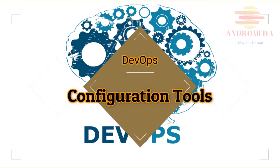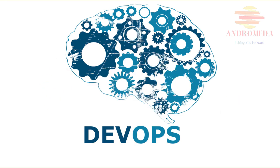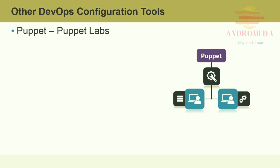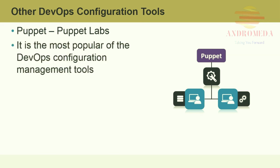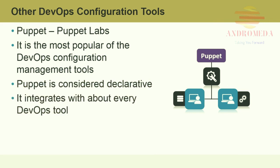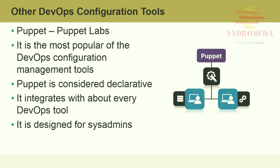Puppet by Puppet Labs is a Ruby-based open-source configuration management tool. Like Chef, it is released as free software under the Apache 2.0 license. Puppet is considered the most popular of the DevOps configuration management tools. It is considered declarative and integrates with just about every other DevOps tool. Puppet is designed for system administrators and is model-driven, so programming knowledge is not necessarily needed to use it. However, the complexity of Puppet is undeniable and extensive engineering skills are needed to implement it.